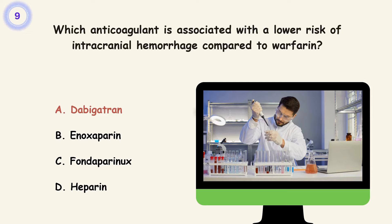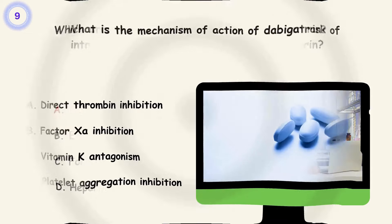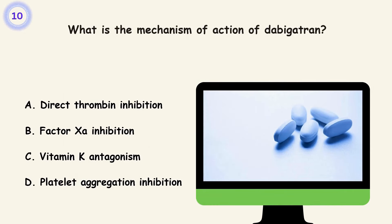Question 10. What is the mechanism of action of dabigatran? A. Direct thrombin inhibition. B. Factor Xa inhibition. C. Vitamin K antagonism. D. Platelet aggregation inhibition. Answer is A. Direct thrombin inhibition.